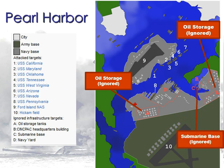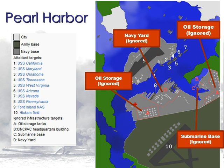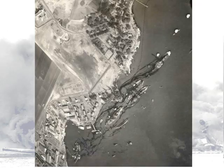Another thing Japan missed was our submarine base — all our submarines were still intact. They also missed the navy yard used to repair ships. And so a number of the ships that were hit and attacked during Pearl Harbor would actually go on to be used later in the war, which we'll look at in a minute.